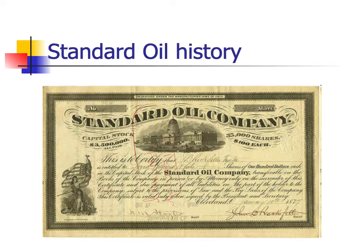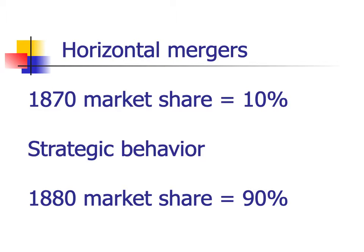A horizontal merger is buying a direct competitor. Standard Oil used a wide variety of strategic behavior to limit the success of competing firms. They used differential pricing — pricing lower in an area where they were trying to damage a rival. They would purchase a rival's industrial customers, cutting them off from their market. They would control pipelines, cutting off access. They used buying power, or monopsony, to get preferential treatment from the railroads, often using that to increase their rivals' costs. Rivals found they could not compete with these aggressive tactics, and Standard Oil was happy to buy them up.